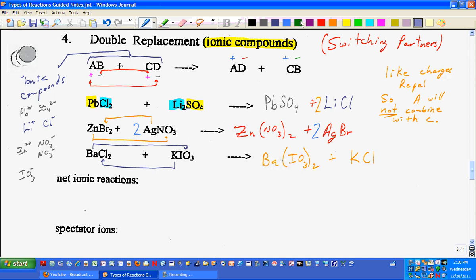As far as balancing goes, I need a two out in front of this and a two out in front of this. And that does it. And I'm done. So, again, switching partners, pretty straightforward.